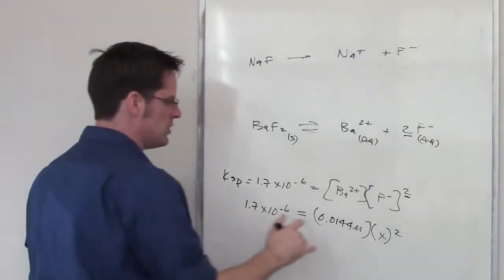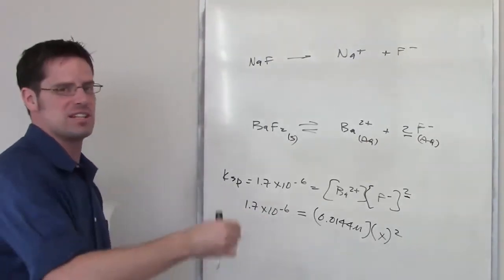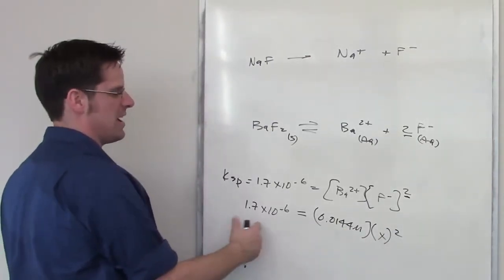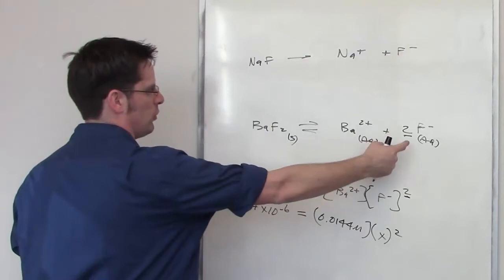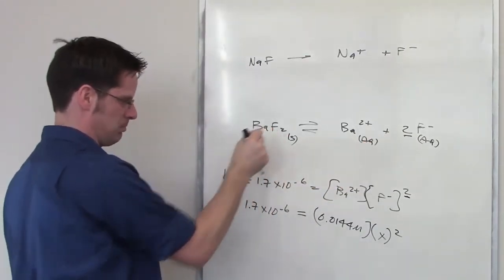So really, all I have to do is solve for X and then say any number that's larger than X will give me a larger value than Ksp, and that will be too much fluoride to allow this to remain dissolved, and we'll start to see this precipitate out. Does that make sense?